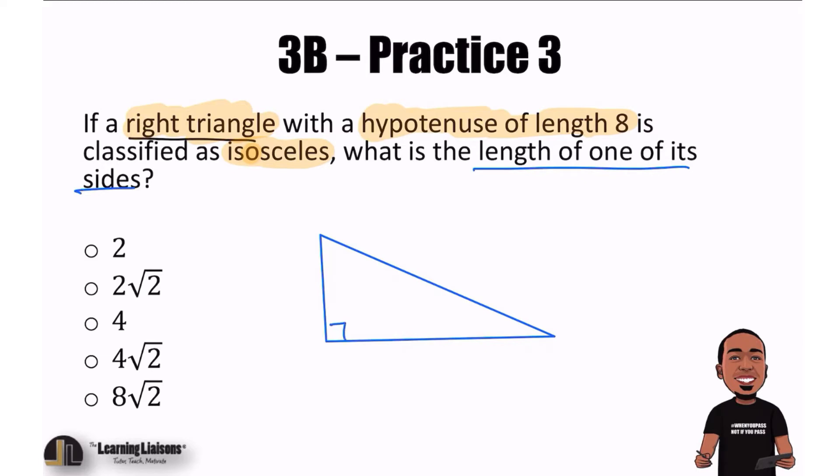Because here we have a right triangle. Hypotenuse of length 8. Hypotenuse is the side across from the right angle. But look, it says classified as isosceles. Isosceles means that two sides are congruent. If we have the hypotenuse, the hypotenuse is the longest side of a right triangle. What that means is that the other sides can't be 8. They're smaller than 8.